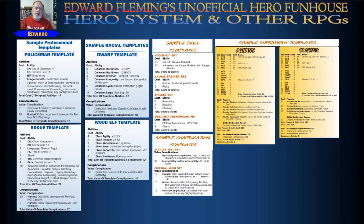As with everything in the Hero System, templates are totally optional. They help beginning players and also veteran players who have a good idea of what they want for their character, allowing them to choose certain templates and modify them to taste. However, there are some templates you can't modify — such as racial characteristics. You get a bonus but you could always buy them down, though it's not typical for a dwarf to have a low strength, for example.